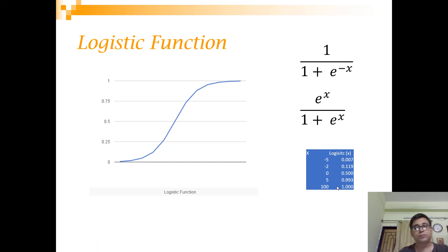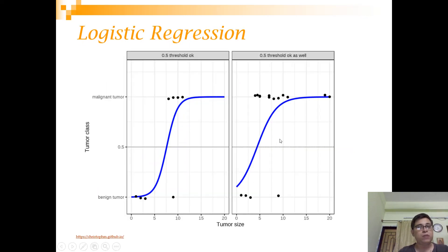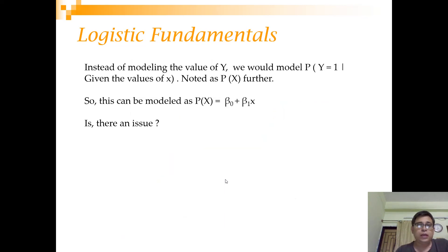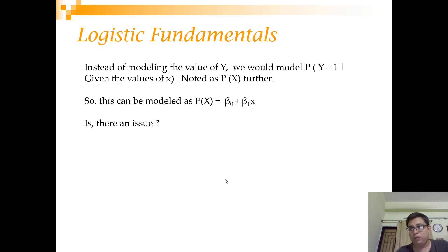This S-shaped curve can be used for our classification problem. Given a tumor size, the logistic regression curve gives a corresponding value, and if it is more than 0.5 the tumor is classified as malignant. The question is: what do we actually fit in logistic regression? We want to model p(x) — the probability of y equal to 1 given x. But directly setting p(x) equal to beta 0 plus beta 1 times x still risks going outside the 0 to 1 range.